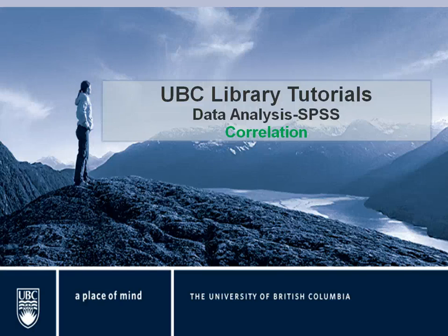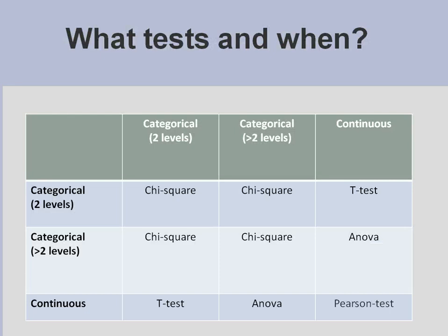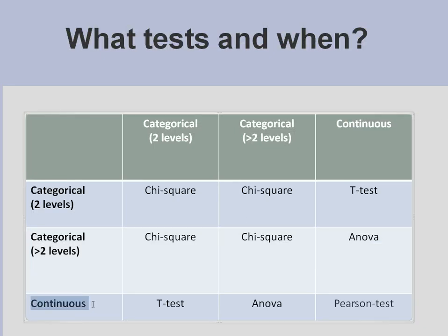Welcome to UBC Library Tutorials, Data Analysis. We're going to talk about correlation. When you have two continuous variables and you want to compare these two, you can use the Pearson Test.